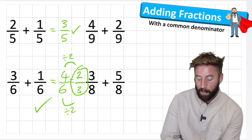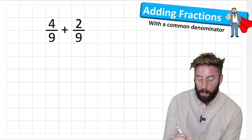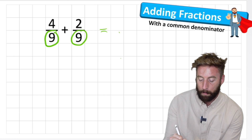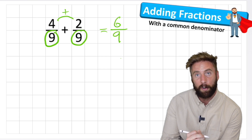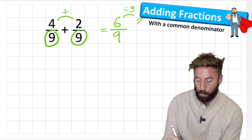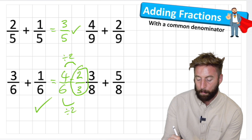Question three: four ninths add two ninths. I'm adding ninths so my answer must also be in ninths - I can simply add my two numerators. Four add two equals six - six ninths. Can you see a common factor between six and nine? Three! I can divide six by three, leaving two, and nine by three leaving three. So four ninths plus two ninths equals two thirds.